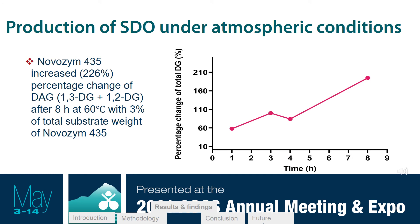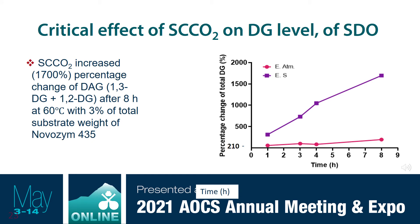In the first objective, we try to produce soybean oil-based structural lipids using enzymatic glycerolysis under atmospheric conditions. After 8 hours of reaction at 60 degrees centigrade, we get an increase in the percentage change of DG, showing that Novozyme 435 is effective at these reaction conditions. Now, when I charge my system with SCCO2, the Y-axis has been expanded and you can see that the line is now almost flat — therefore, SCCO2 is critical to efficacious enzymatic production of DG-enriched structural lipids.